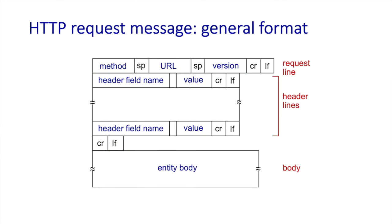Here's the general format for an HTTP request message: the request line followed by header lines. The HTTP protocol specification, RFC 7320, is 85 pages long and has all the details about the methods, header field names, and values. As networking students we don't need to know all of those details, but if we were implementing an HTTP client or server, we'd have to know every detail. When we looked at the GET message, there was no entity body — that's needed by some request messages like POST, which need to send additional information to the server.